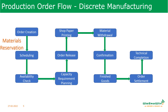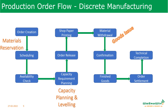Production orders are released on the release date as long as required materials and capacity are available. Production-related documents like shop floor papers are printed to prepare for production execution. The capacity situation is evaluated and any required capacity leveling is carried out in any phase of production order processing, although this is usually ensured before the actual production starts.